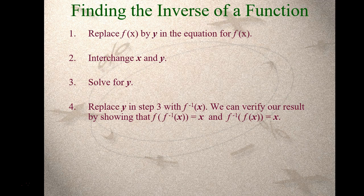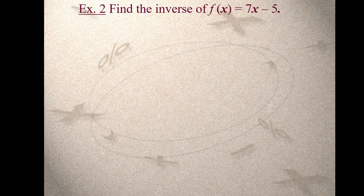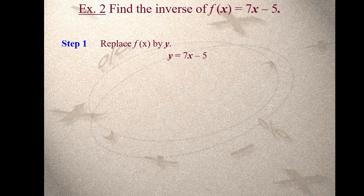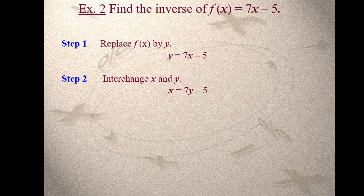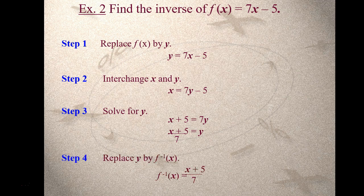Let's do an example. Find the inverse for f of x equals 7x minus 5. Step one: replace f of x with y. Step two: interchange x and y, so we get x equals 7y minus 5. Step three: solve for y — add 5 to the other side, then divide by 7. That's the inverse function. Step four: replace y with the inverse notation, so y becomes f inverse of x.